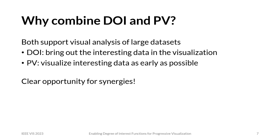So the question would be, why would you combine these two approaches? Both are approaches for supporting the visual analysis of large datasets. Degree of Interest Functions bring out those parts of the data most interesting to the task, and progressive visualization helps us get to the interesting parts of the data as early as possible. So there are obvious synergies between the two that we would like to harvest by combining them.